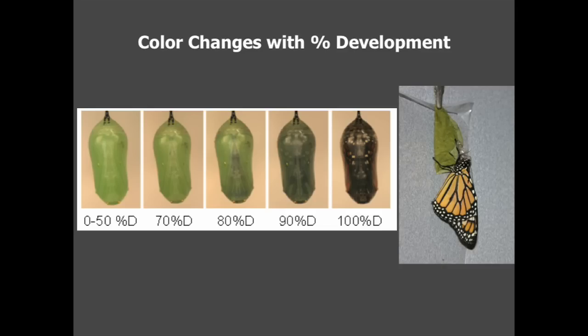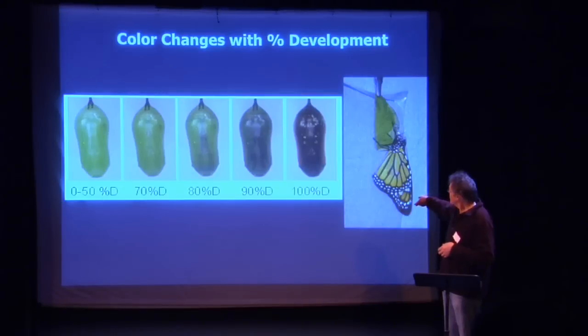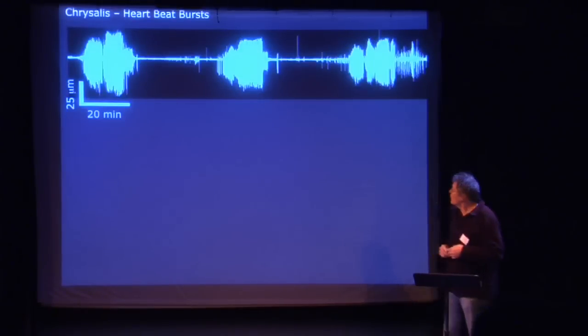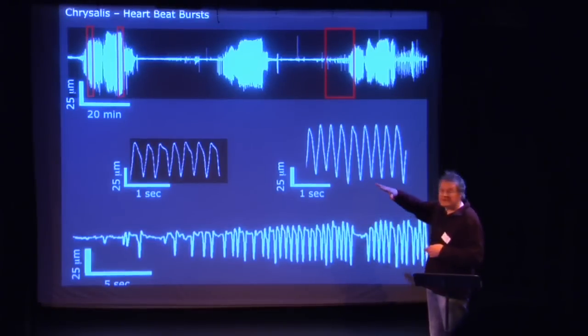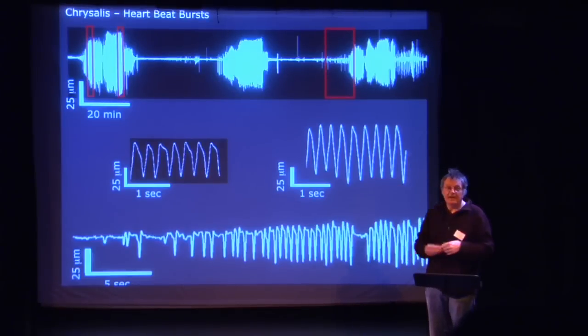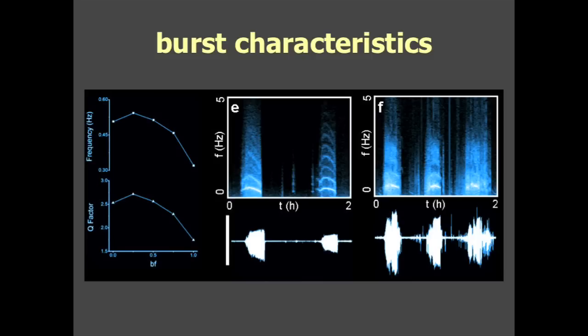First we saw that it was changing color, and eventually the butterfly came out. When we followed this for a whole week, we saw bursts of periodic oscillations. As it undergoes metamorphosis, it's not continuously changing. It's undergoing bursts of oscillation, then there's a period of quietness and another burst. Towards the end of the cycle, the activity increases so the on period is much longer than the off period.